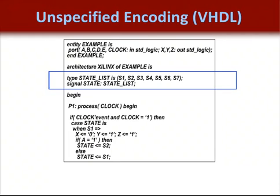On this slide, we have built a larger finite state machine without defining its encoding. When synthesis tools see this, they usually encode it as binary if it has fewer than 8 states, one-hot encoding if it has fewer than 16 states, and gray if it has more than 16 states. It's also interesting to note that synthesis tools assign state values starting with the leftmost value in the list, so state 1 would be all 0s, state 2 would be 001, and so on up to state 7 which would be 110.